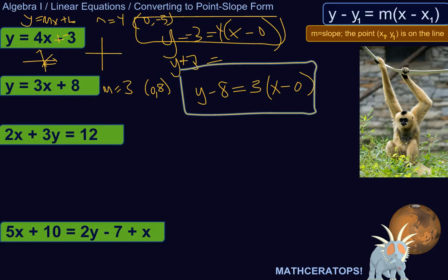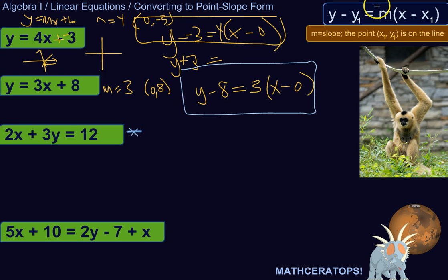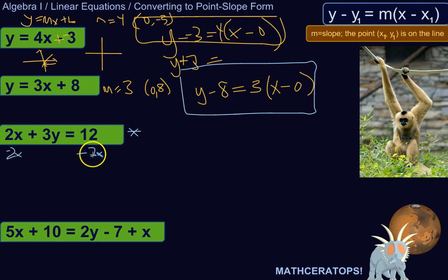Let's switch to standard form. We've got 2X plus 3Y equals 12. We'll manipulate the equation until it looks like point-slope form — just hacking at it algebraically. We want Y-related stuff isolated, so first let's move the 2X to the other side by subtracting it from both sides. So we get 3Y equals negative 2X plus 12.